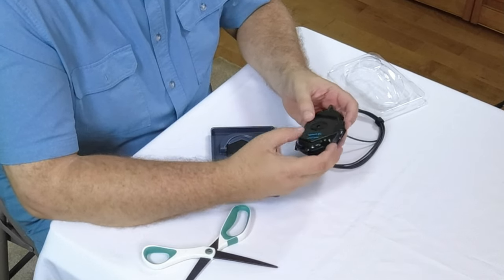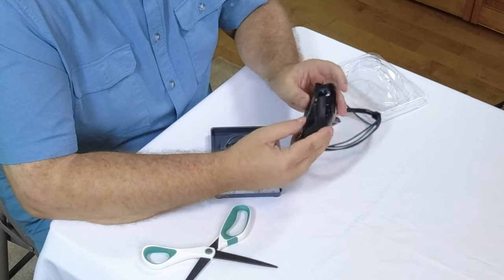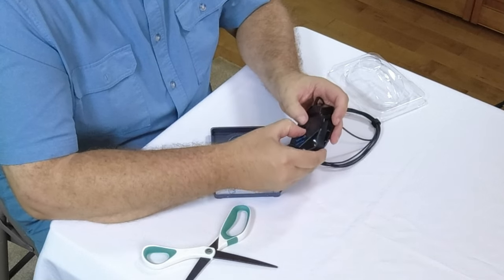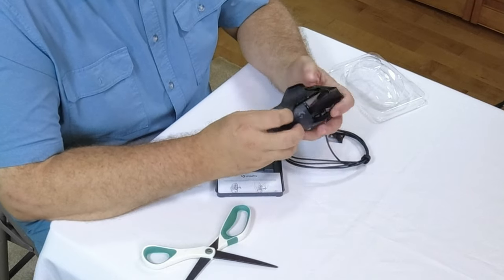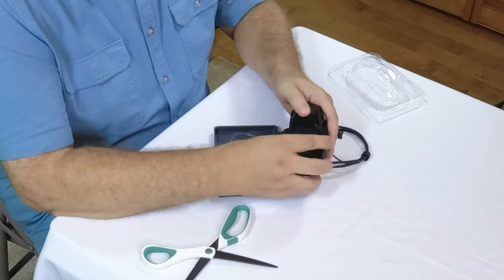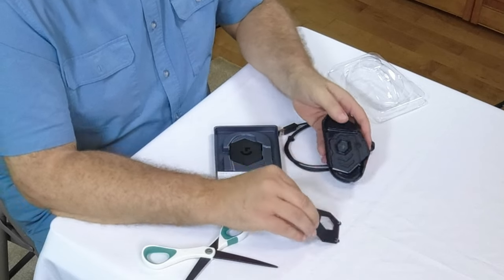So somehow you're supposed to be able to take the bottom off and put weights in it. It says you just kind of pull it right off. Oh you do. Pull that right off there.